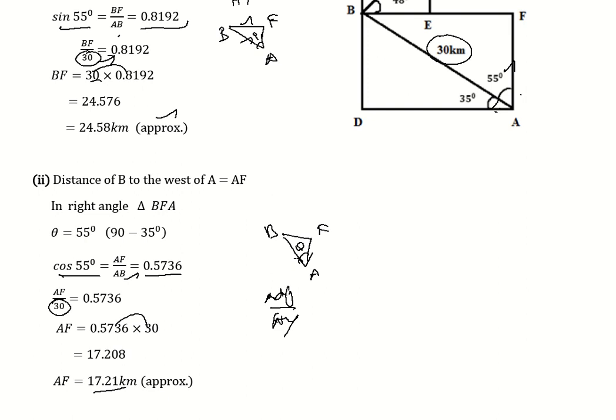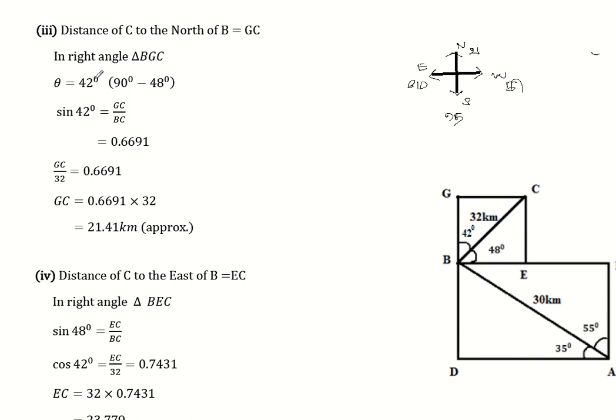The distance of C to north of B is GC. Now triangle, 42 degrees. Sin 42 is opposite by hypotenuse. Opposite is GC, hypotenuse is BC. So if you have a value of sin, it is 0.6691. GC by BC equals 32, which is equal to 0.6691. If you multiply, 0.6691 times 32 is 21.41 kilometers approximately.